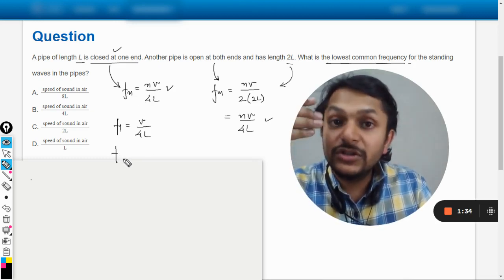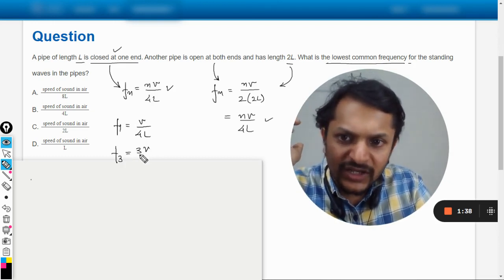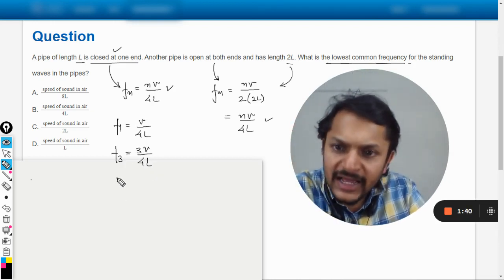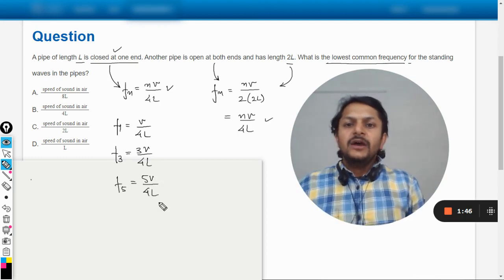And the next harmonic will be the fifth harmonic. But when it comes to the other pipe which is open at both ends, you can have all the natural numbers. So F1 will be V/(4L), F2 will be 2V/(4L),